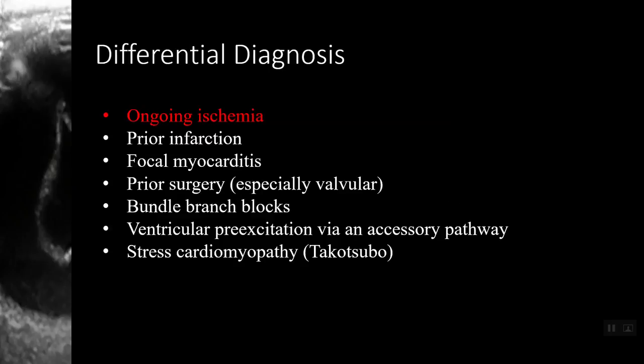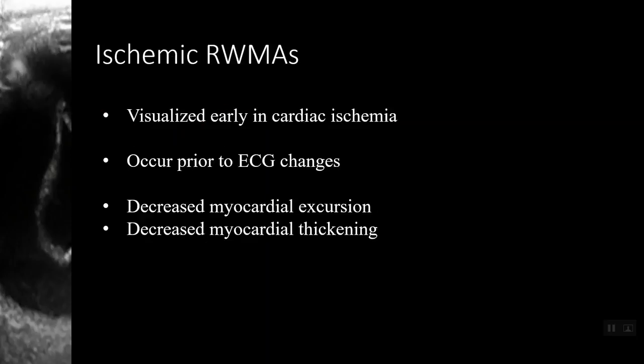The differential diagnosis of regional wall motion abnormalities is quite large. Today we will be focusing on patterns of ischemia, as these are likely to change your acute management of certain patients. However, prior infarctions, myocarditis, valvular surgeries, depolarization abnormalities, and Takotsubo's cardiomyopathy are all significant causes of wall motion abnormalities and will be touched upon today. Generally speaking, regional wall motion abnormalities can be visualized very early on in the ischemic process, even prior to ECG changes.